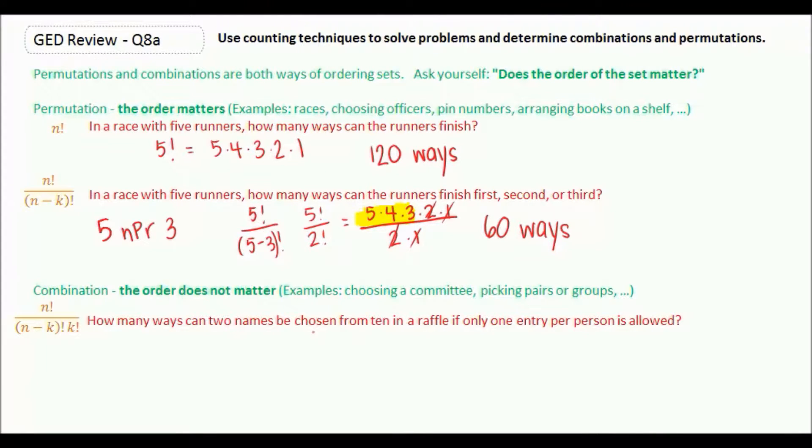So once again, if we had a calculator, we would say we're taking ten people, the button you often press is NCR, C for combination this time, and two people at a time. But let's use our formula. It's very similar to our permutation formula, except we're adding an extra k factorial at the end. So we're going to say ten factorial over ten minus two factorial, and our k is two factorial.